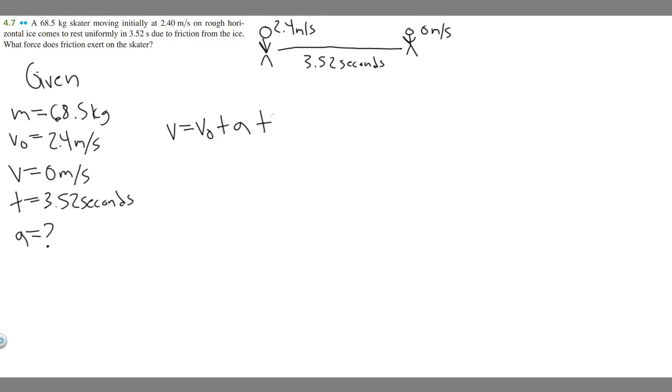And so hopefully by now you're pretty good at kinematics, so all we've got to do is just plug in what we're given. So we know V is going to be 0. V sub 0 is 2.4 plus A times T, which is 3.52. So I'm just going to write plus 3.52A, and then now what we need to do is solve for A.